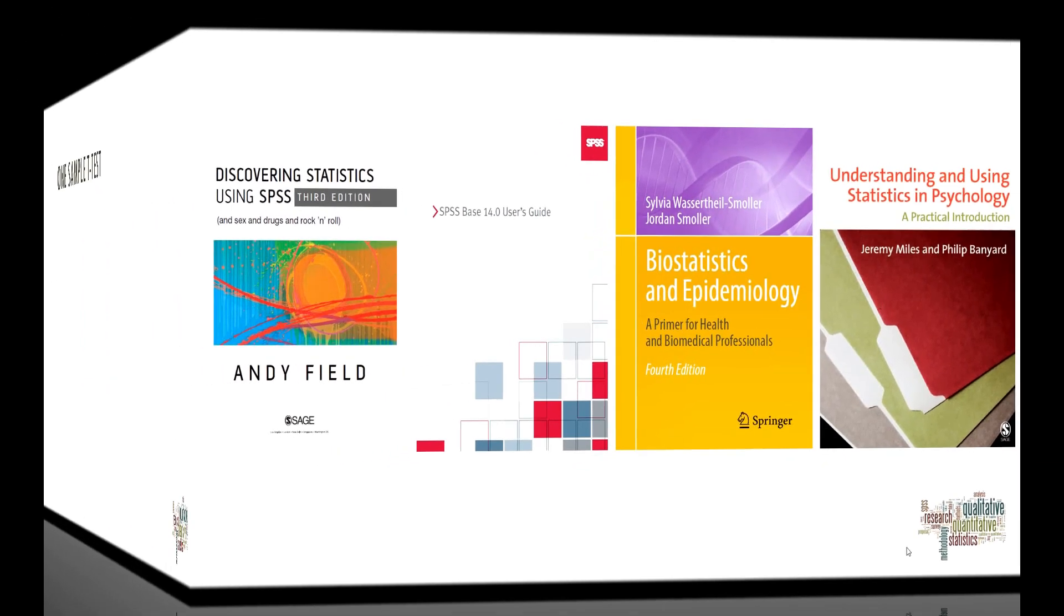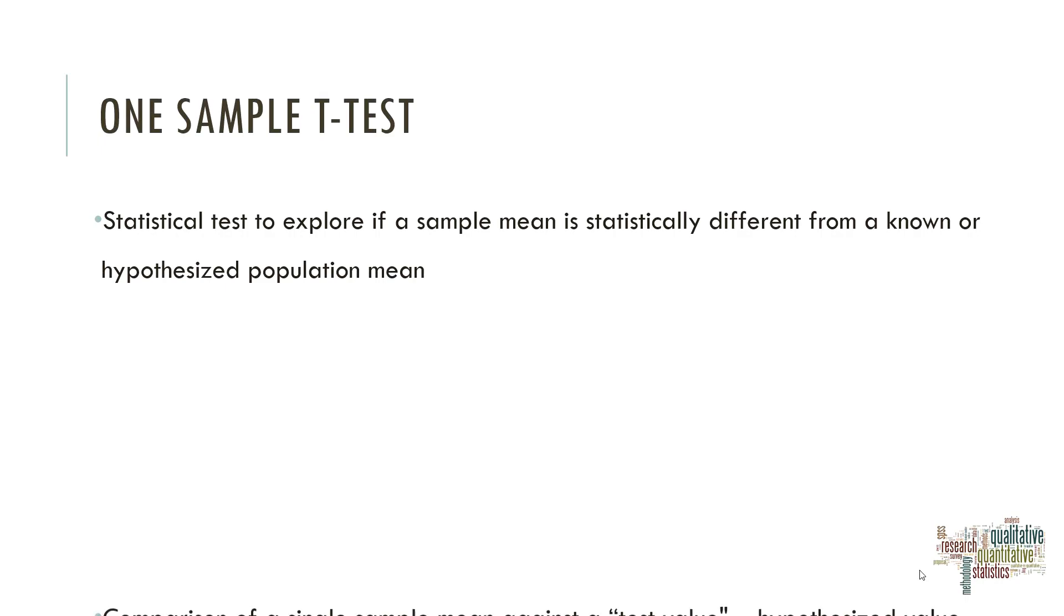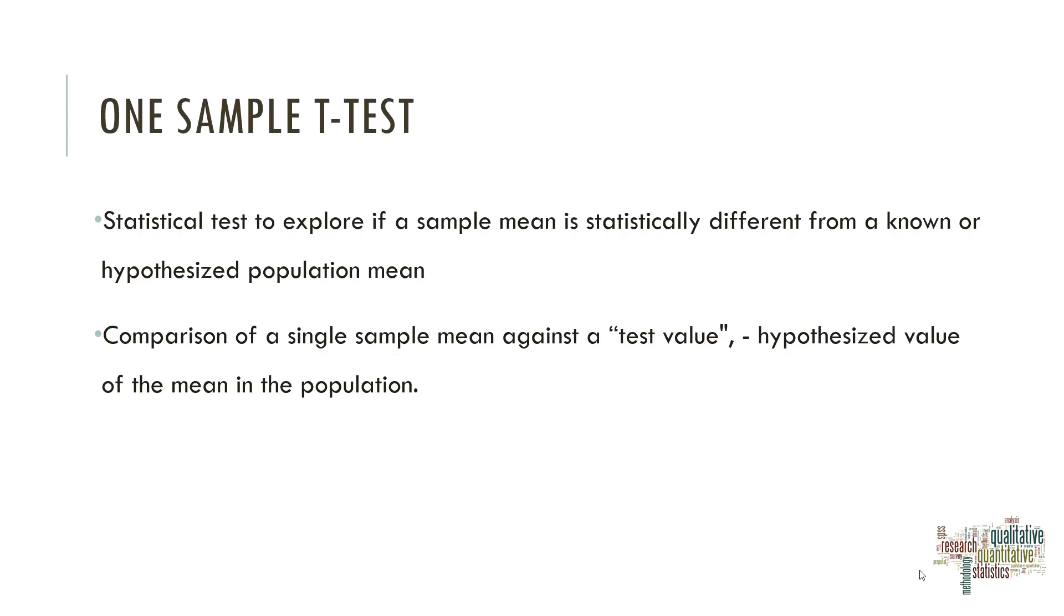One-sample T-test is a statistical test that is used to explore if a sample mean is statistically different from a known or an hypothesized population mean. Typically, it's a sample mean that it's tested against a test value and this test value is an hypothesized value of a mean in the population.